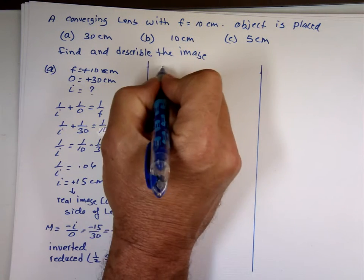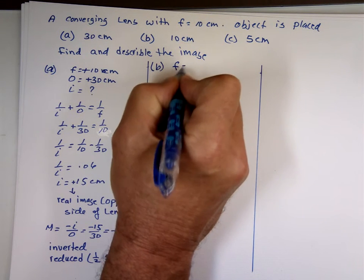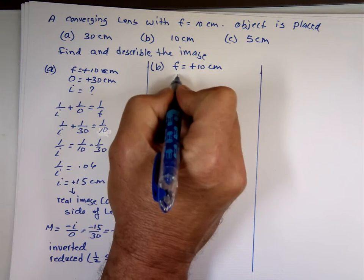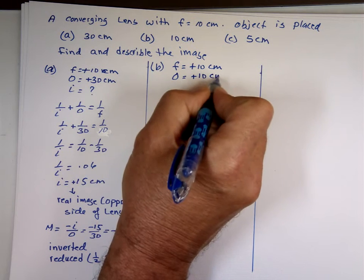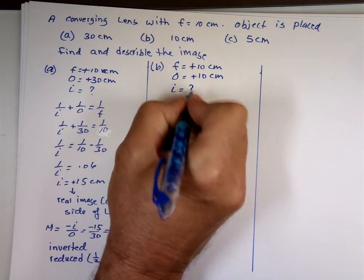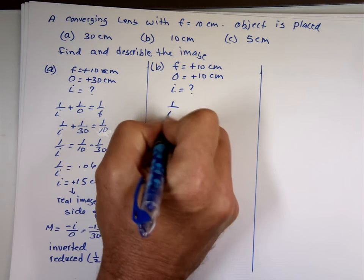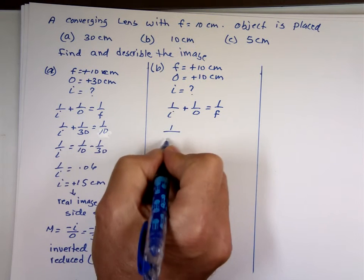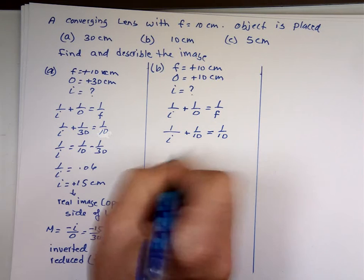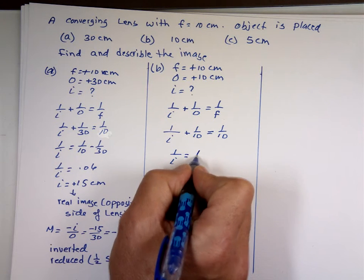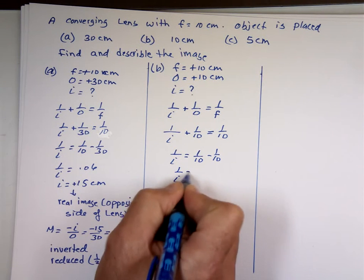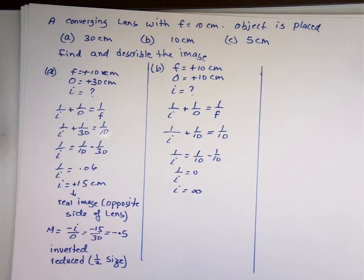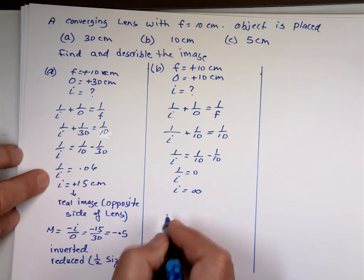Part B: object at 10 centimeters, which equals the focal length. Using 1/I + 1/10 = 1/10, we get 1/I = 0. The image is at infinity — it disappears. If you put an object at the focal point, there is no image formed.